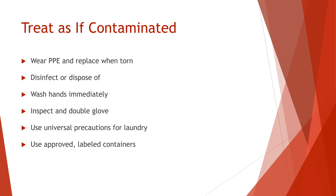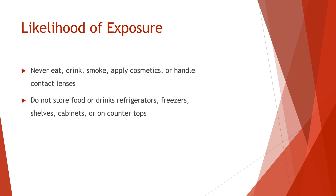To prevent exposure, never touch the outside of used gloves. Remove clothing that is contaminated with blood as soon as possible. Use universal precautions when handling contaminated laundry, and be sure to place clothing only in approved and labeled bags or containers. If you are ever in an area where there is a reasonable likelihood of exposure, you should never eat, drink, smoke, apply cosmetics, or handle contact lenses. Don't store food or drinks in refrigerators, freezers, shelves, cabinets, or on countertops where blood or potentially infectious materials are present.